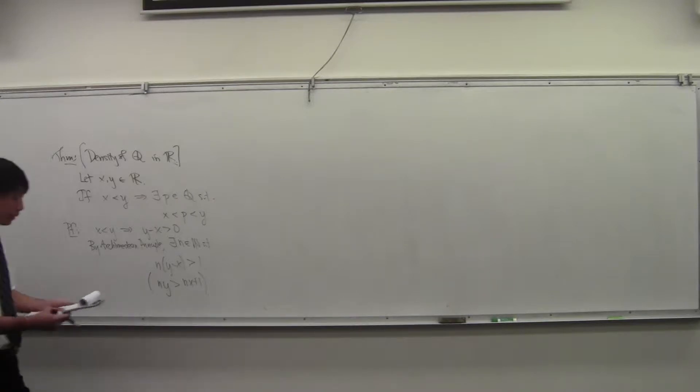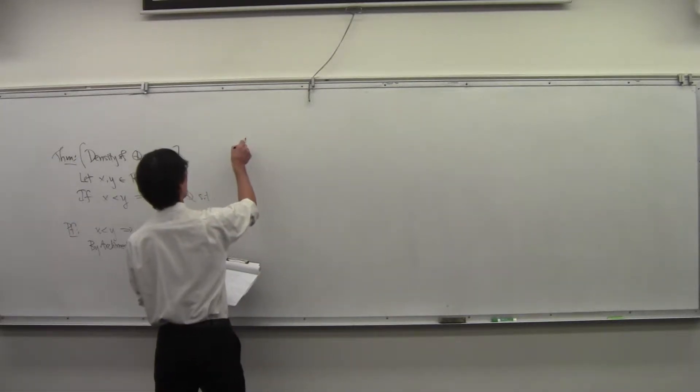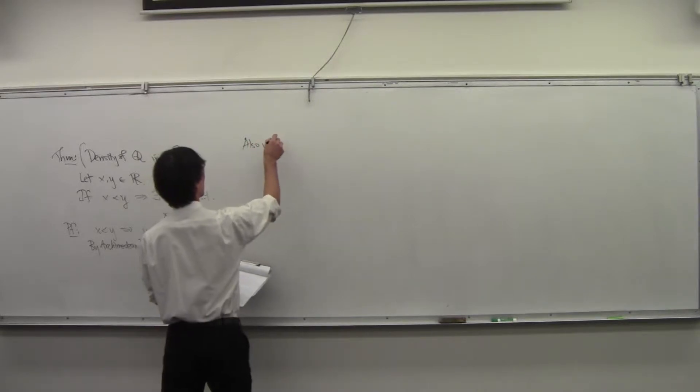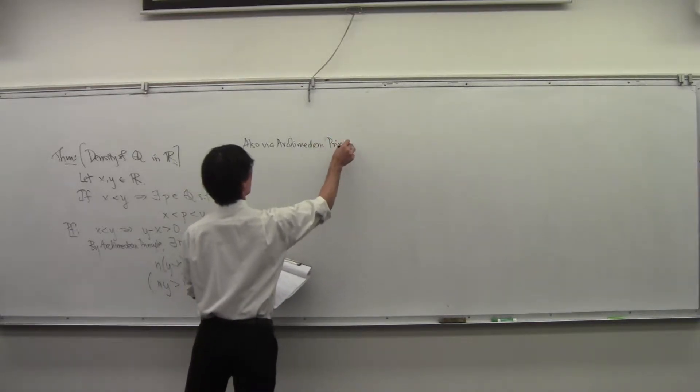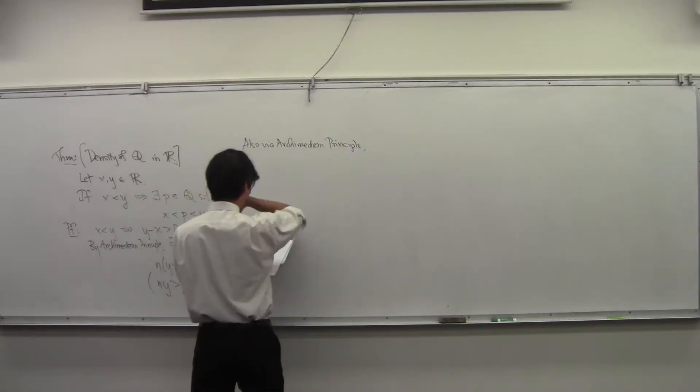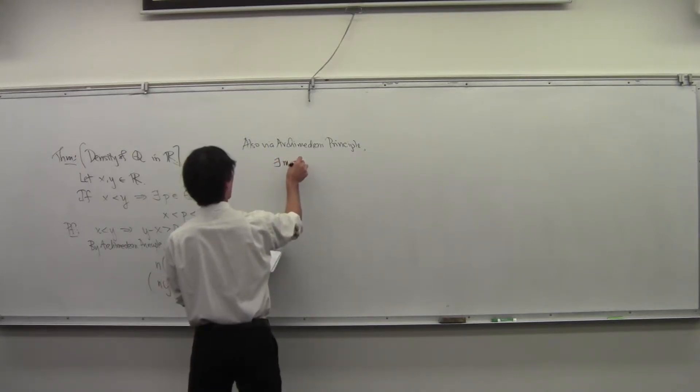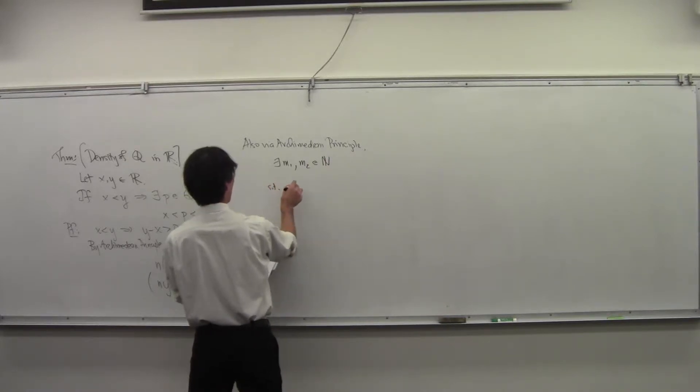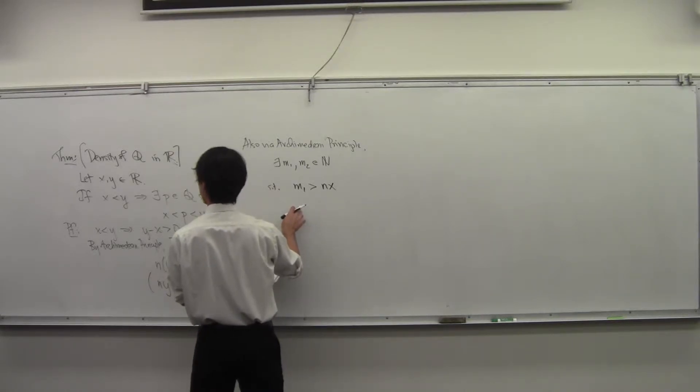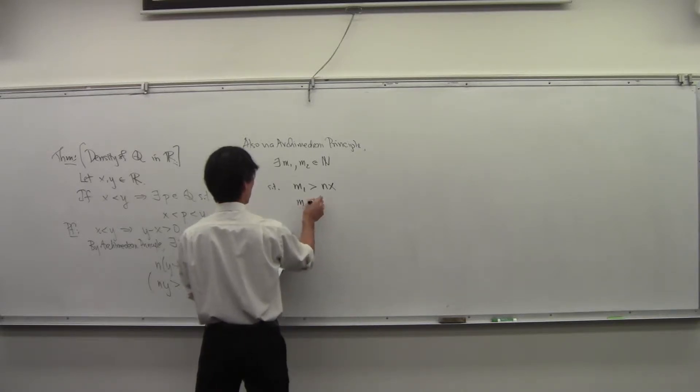Okay, now again, also by the Archimedean principle, we have that there exists M1 and M2, natural numbers, such that M1 is bigger than NX, and M2 is bigger than negative NX.